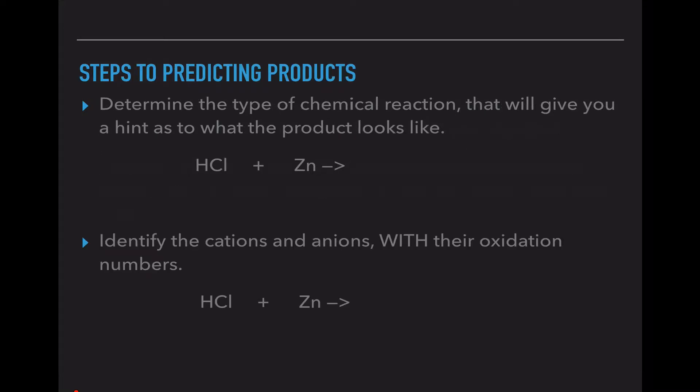So the steps of predicting a product. Determine the type of chemical reaction that we are looking at. This will give us a hint as to what the product looks like. So looking at this chemical formula, we have HCl, this is hydrogen and chlorine bonded together, and zinc all by himself.